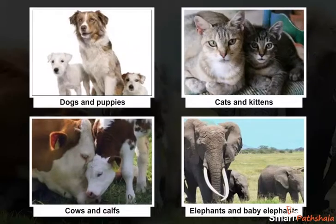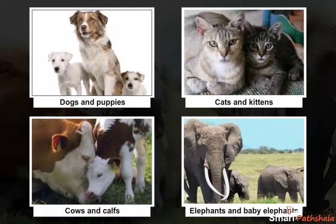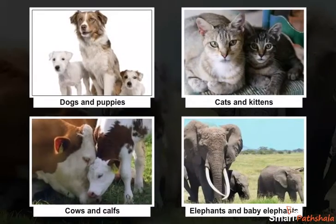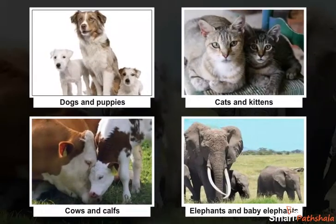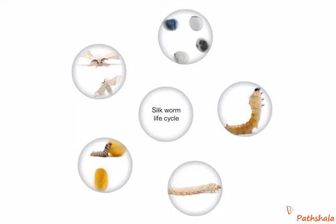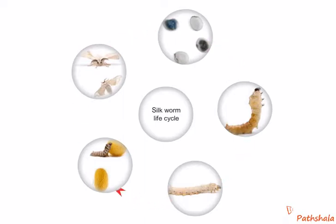However, in some animals the young ones may look very different from the adults. For example, in silkworms and butterflies, the egg first develops into larva which further develops into caterpillar, and the caterpillar will turn into pupa, and pupa finally develops into an adult.